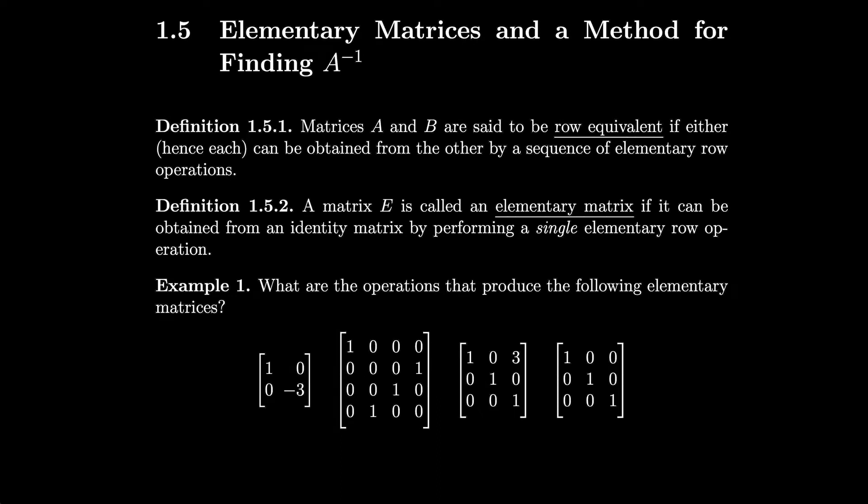Section 1.5: Elementary Matrices and a Method for Finding A Inverse. Matrices A and B are said to be row equivalent if either — hence each — can be obtained from the other by a sequence of elementary row operations. A matrix E is called an elementary matrix if it can be obtained from an identity matrix by performing a single elementary row operation.